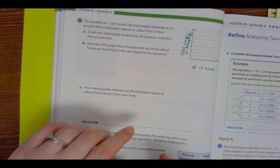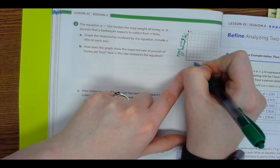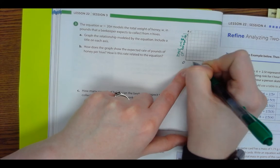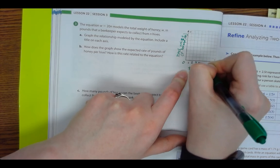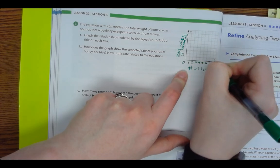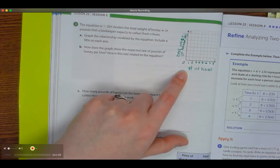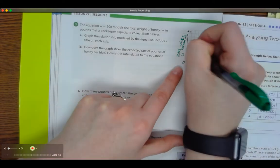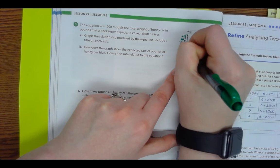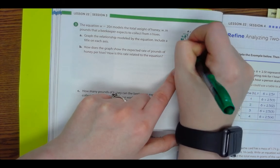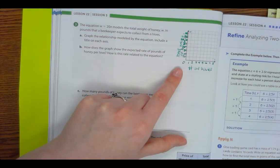All right. So I know that the number of hives is going to be smaller than the pounds, so I'm going to count these by two. So start at zero on the x-axis: 1, 2, 3, 4, 5, 6, 7, 8. And then on the y-axis we're going to do 10, 20, 30, 40, 50, 60, 70, 80.